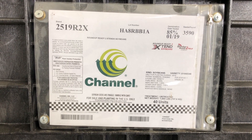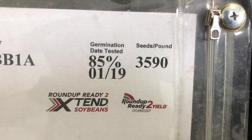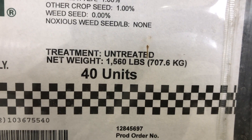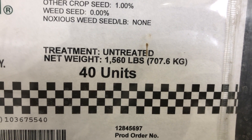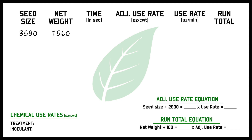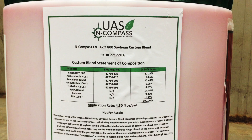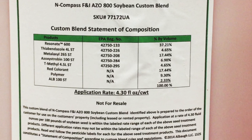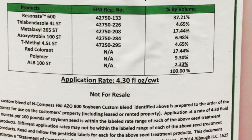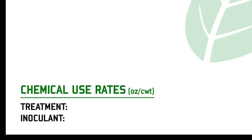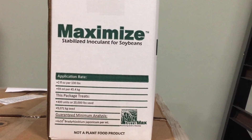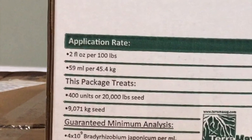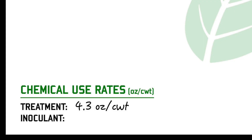The seed size and net weight can be found on the seed tag of the box of seed you are treating. These may vary from box to box. To find the use rates of your treatment and inoculant, check the keg label or packaging. These use rates are based off the perfect seed size of 2,800 seeds per pound or the perfect 50-pound unit.